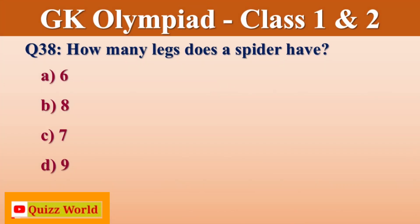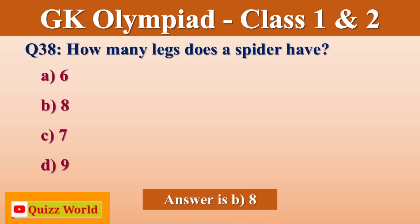How many legs does a spider have? Six, Eight, Seven, Nine. Right answer is Eight.